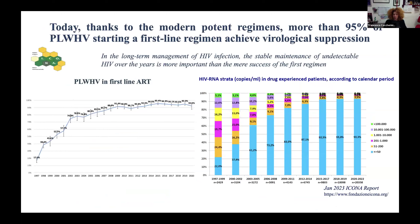The goal is to achieve viral suppression. Today we have modern, potent regimens. In Italy, more than 95% of people living with HIV achieve viral suppression after first-line treatment. Looking at the ICONA cohort of over 20,000 drug-experienced patients, you can see how few patients had viral suppression initially, and now the majority of individuals are living with HIV below 200 copies.